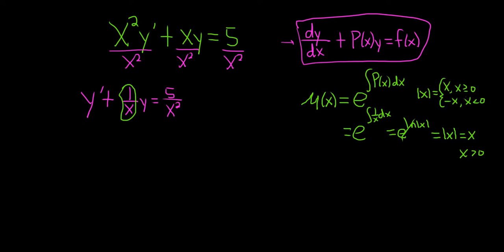You might be wondering, why not make it greater than or equal to 0 like it says here? That's because x can't be equal to 0 in this problem because we divided by x.